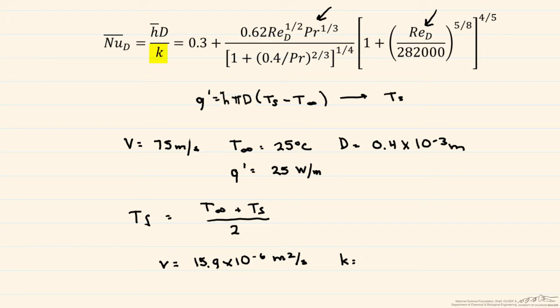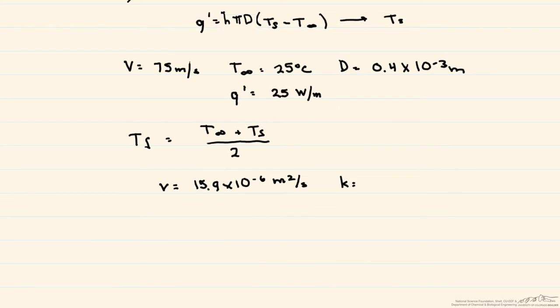If you take a look back here, we need it when we're taking the Nusselt number and turning it into our convective heat transfer coefficient. And we can look up our Prandtl number. Prandtl number is dimensionless.